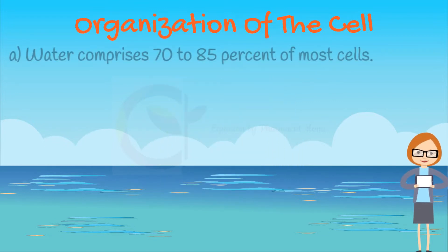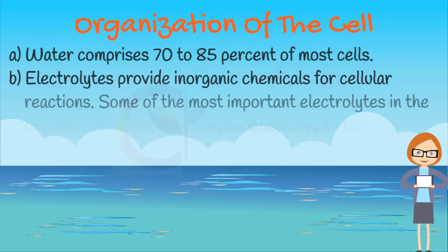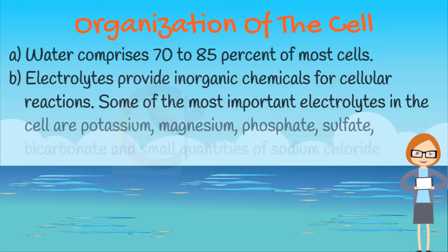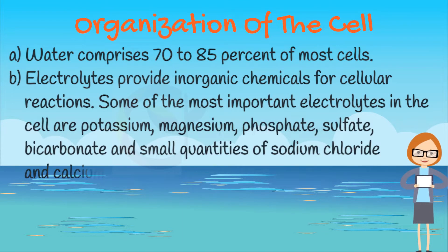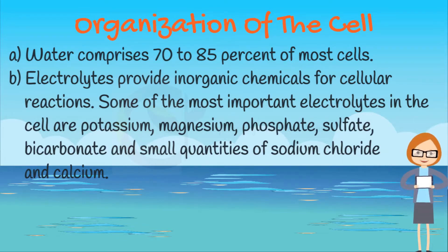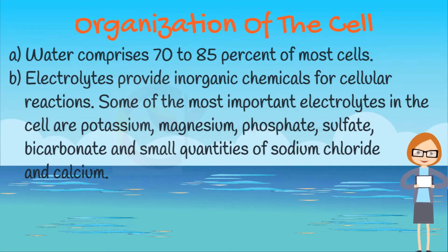Water comprises 70–85% of most cells. Electrolytes provide inorganic chemicals for cellular reactions. Some of the most important electrolytes in the cell are potassium, magnesium, phosphate, sulfate, bicarbonate, and small quantities of sodium, chloride, and calcium.